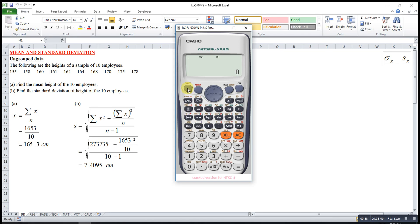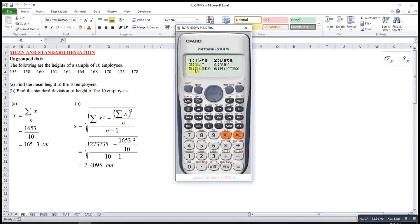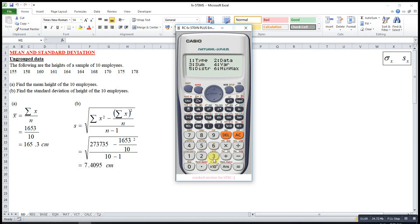After that, shift 1. Let's say if I want all these summation, summation x and summation x squared, then I will press sum 3.